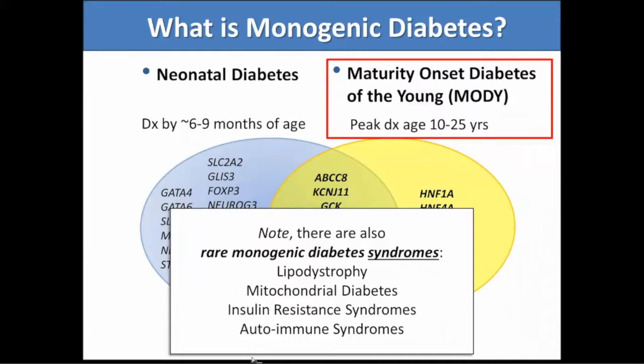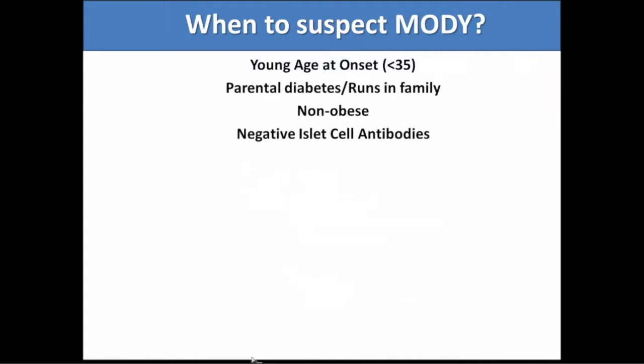There are other rare monogenic diabetes syndromes like lipodystrophy and mitochondrial diabetes, but MODY is the most common form of monogenic diabetes and the one we're most likely to encounter. Key hallmarks: it tends to occur in patients diagnosed at a relatively young age — typically less than 35 — with diabetes running in their family. MODY is autosomal dominant. Typically patients are non-obese and have negative islet cell antibodies.